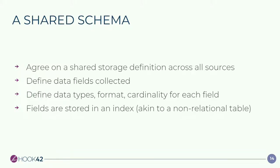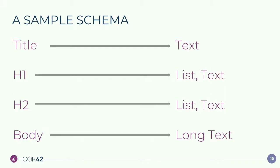These fields end up getting stored within an index. The analogy is a non-relational table — it's flat, like a big data table. If we're scouring our sources, you might have a title on the page, an H1, an H2, or a body tag. Those map to fields within the schema. So we'd say: I want to get the title, I want to get all the H1s, I want to get the H2s. The field types on the right — text, list of text, long text — give you an example of how to set up the schema and fields.